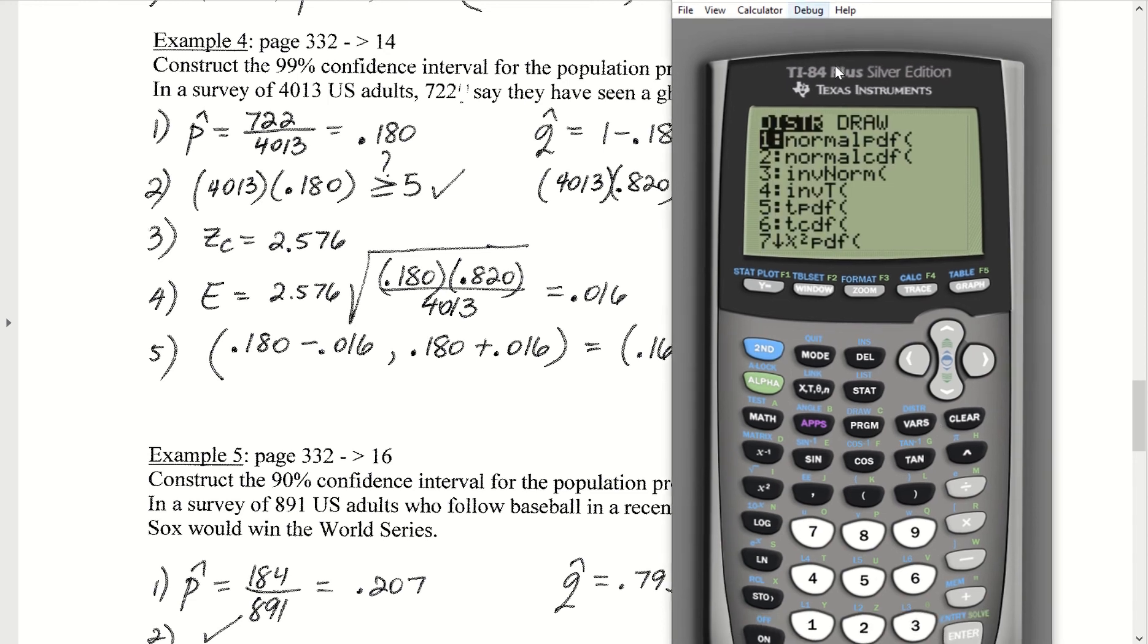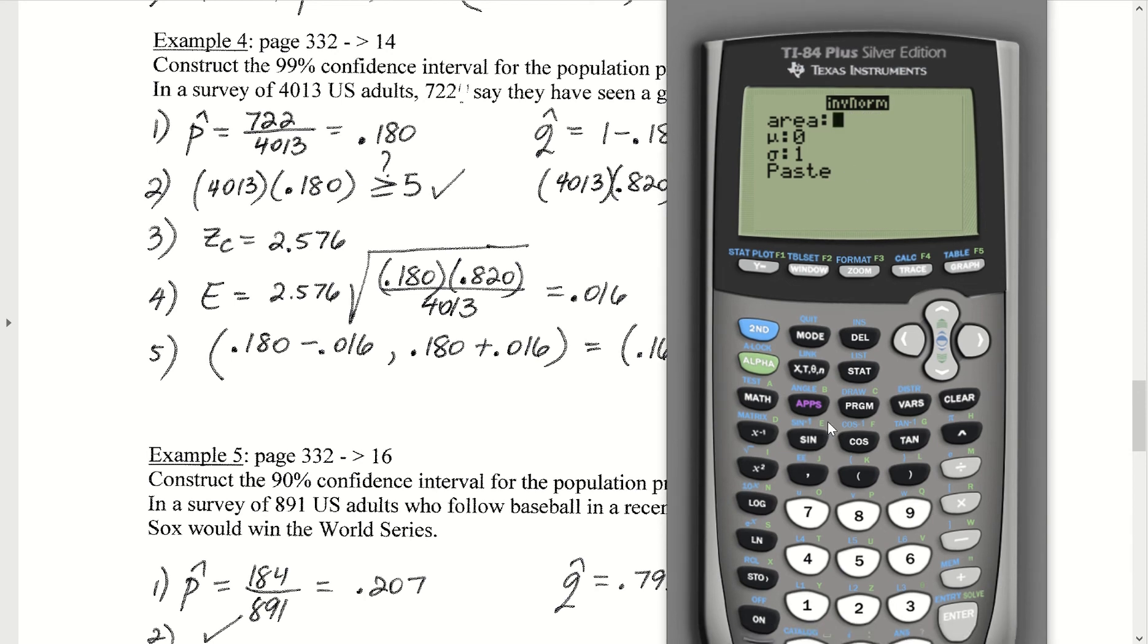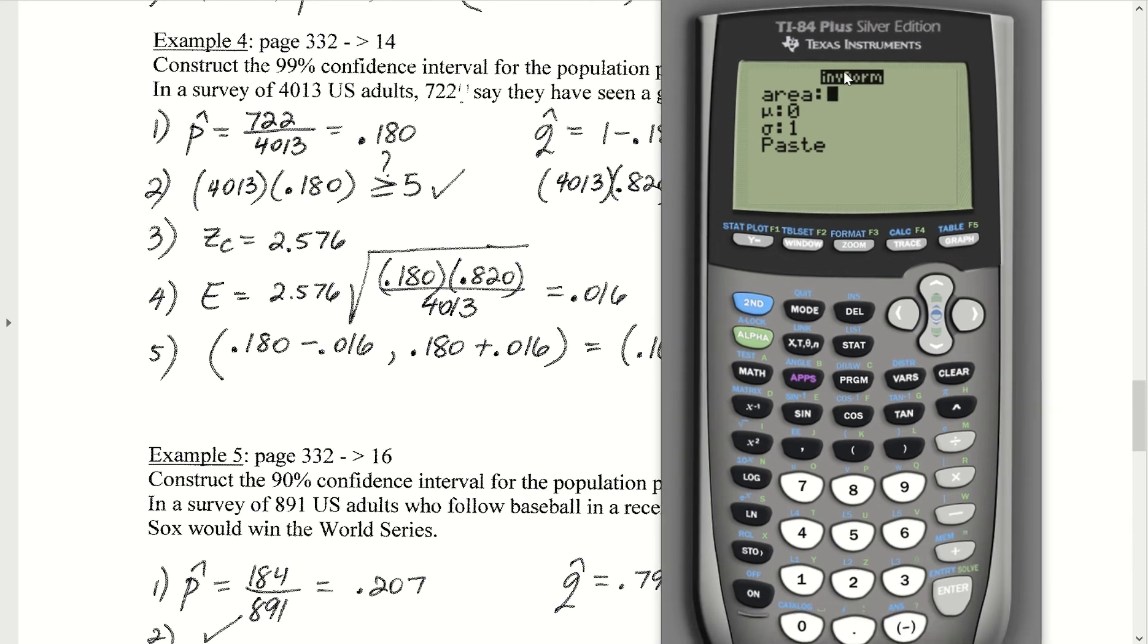Go down to inverse norm. The tail area is 1 minus C divided by 2. 1 minus 0.99 divided by 2 would be 0.005. Hit enter. That would produce a Z-critical value of 2.576.